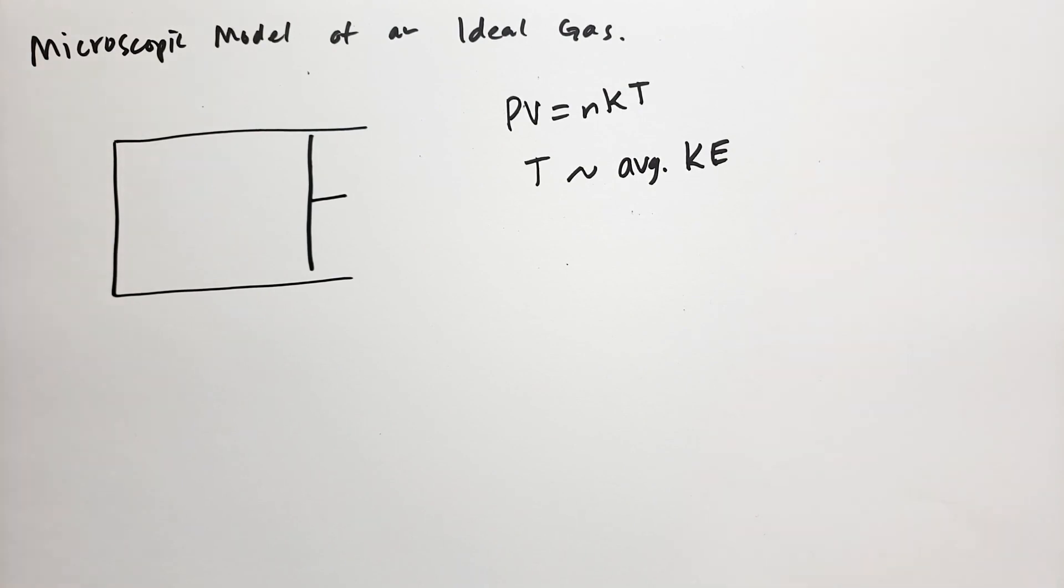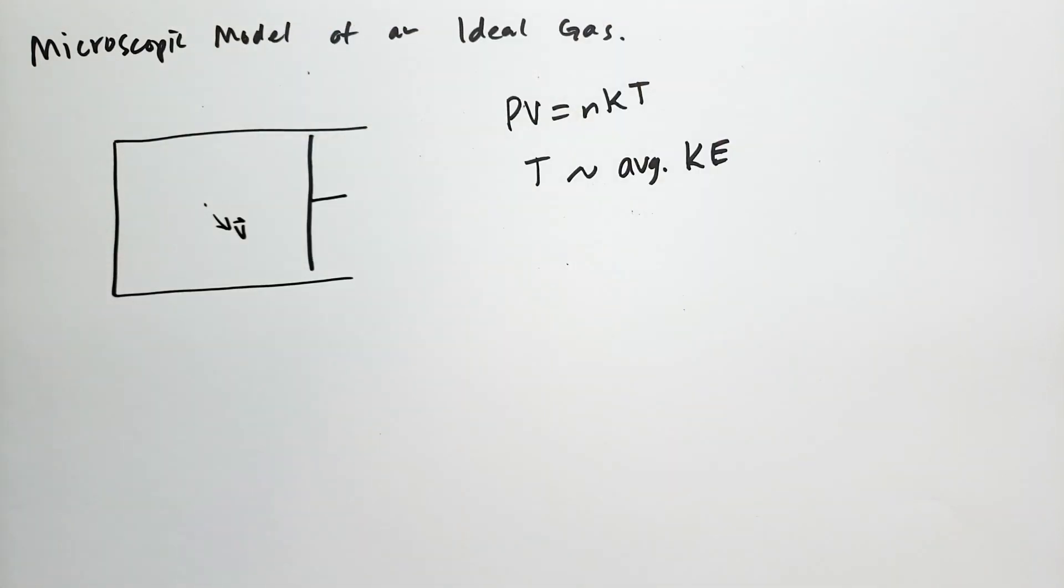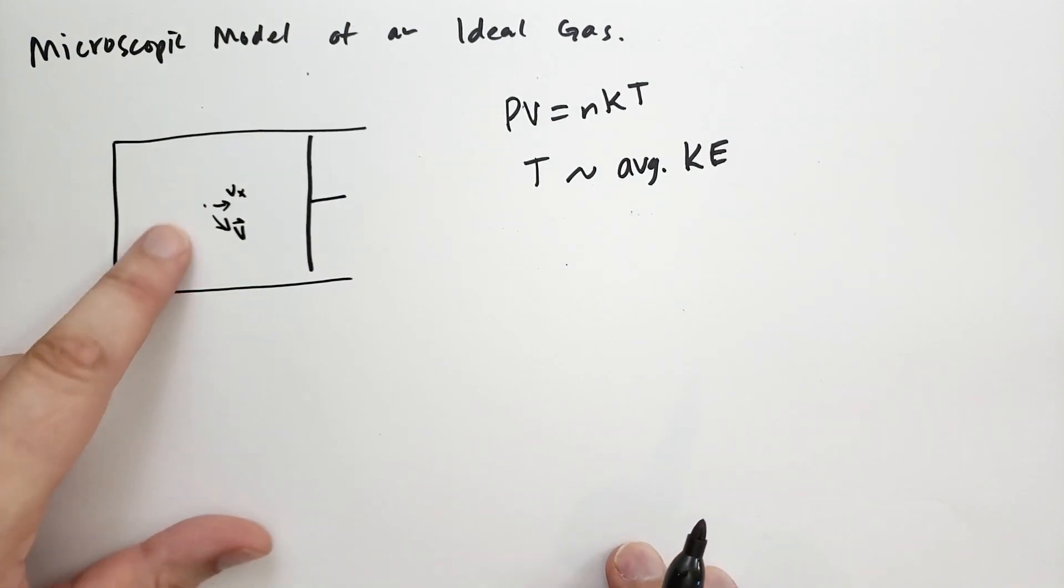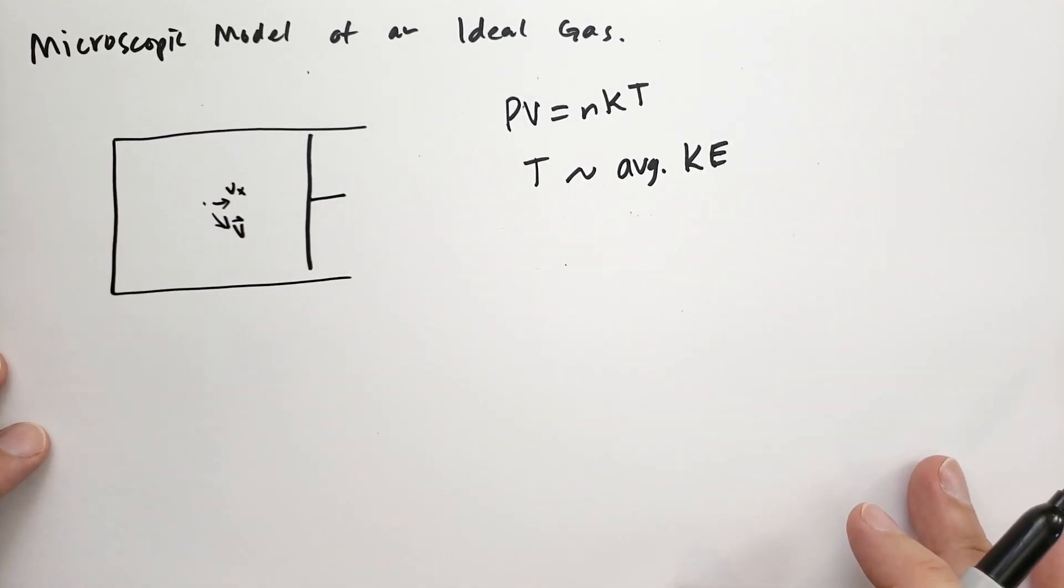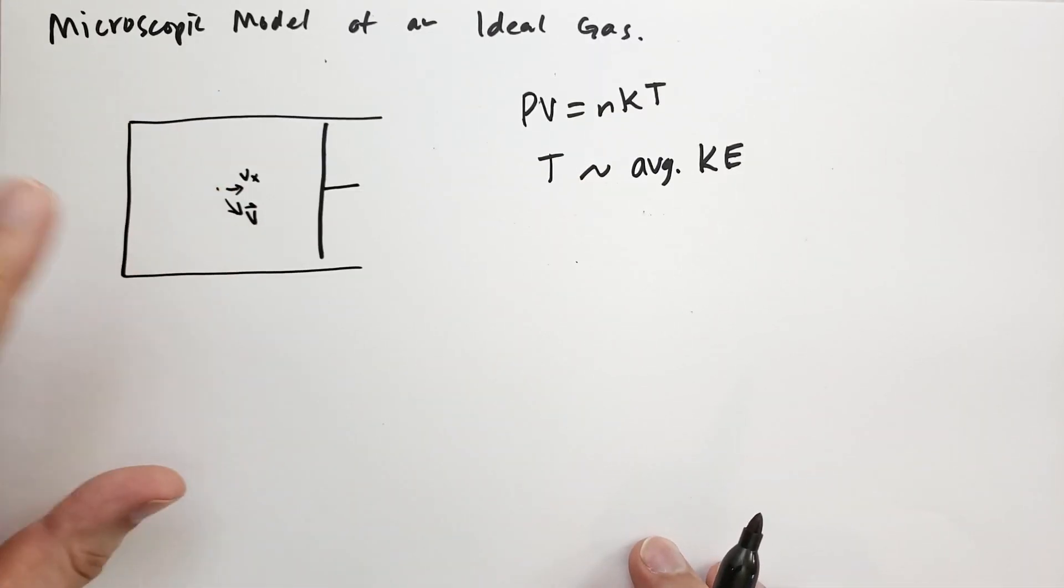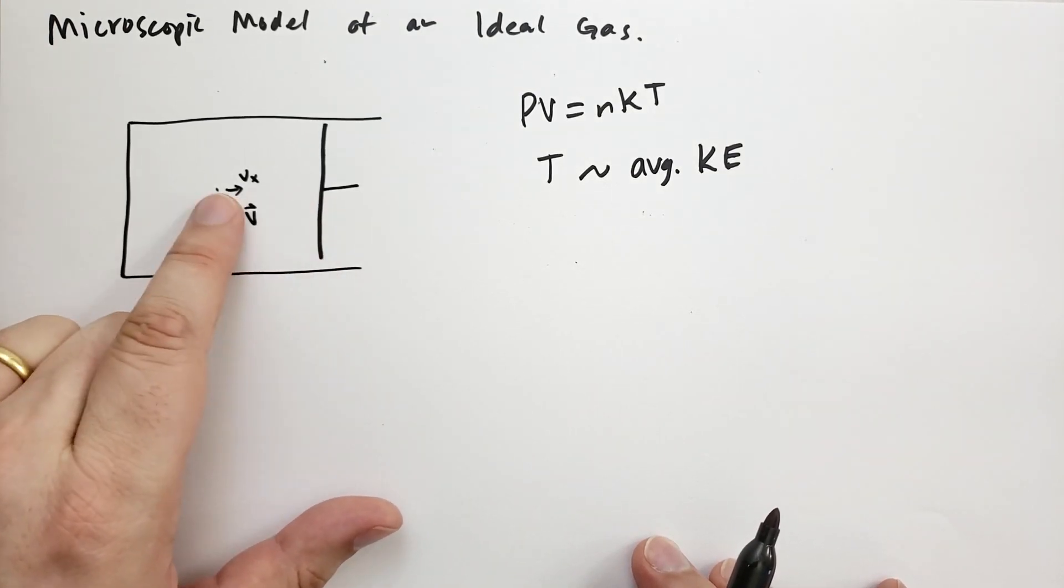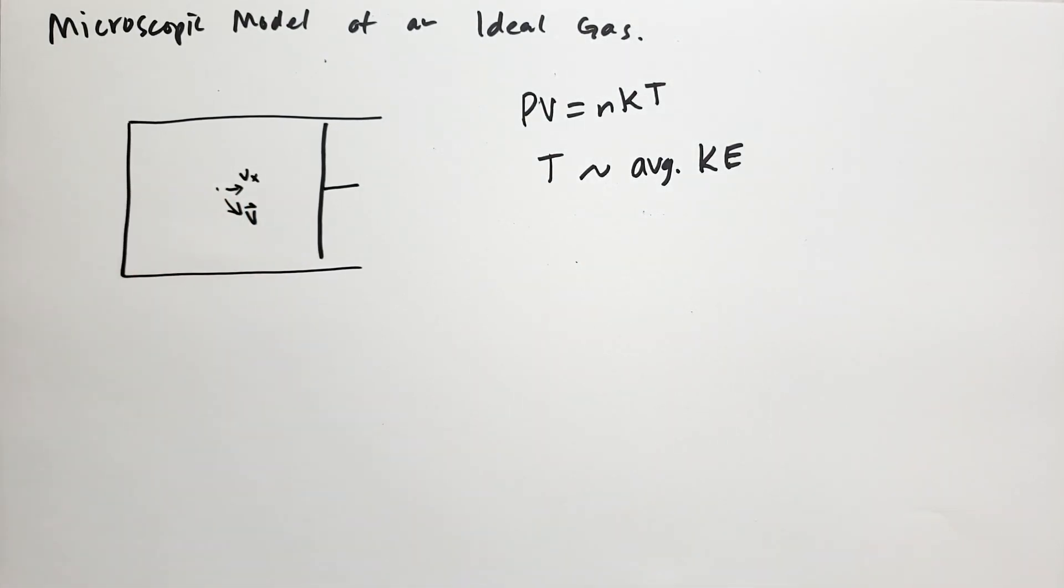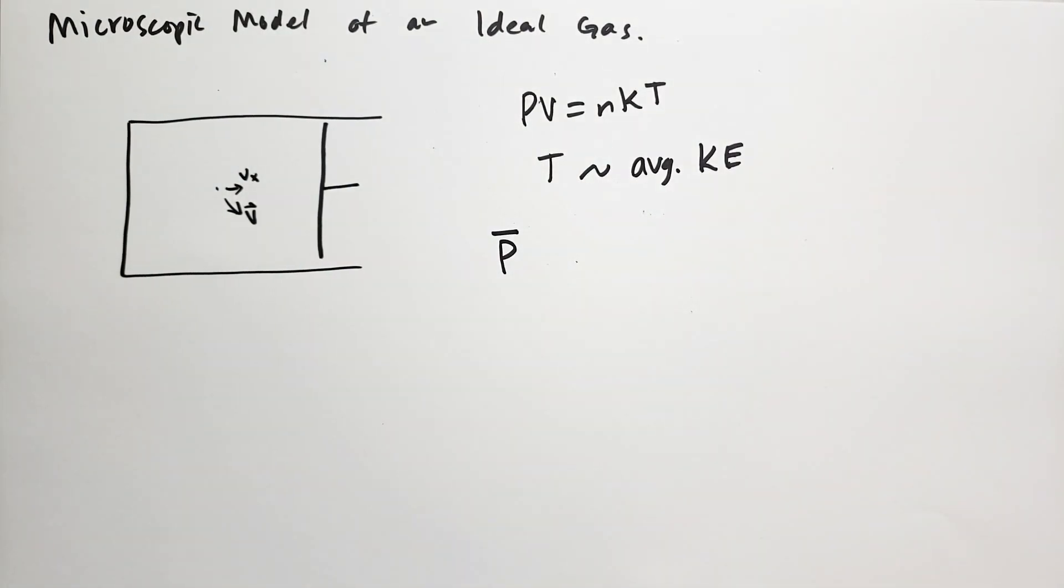We're going to use this piston to measure the pressure of the gas. And the goal is that we're going to use this formula, PV equals NKT, to determine how temperature relates to the average kinetic energy of the molecules inside of a gas. And so he starts with, let's say we have a single molecule of gas. And this molecule of gas is moving around at some velocity, it's a vector, and that velocity has an X component.